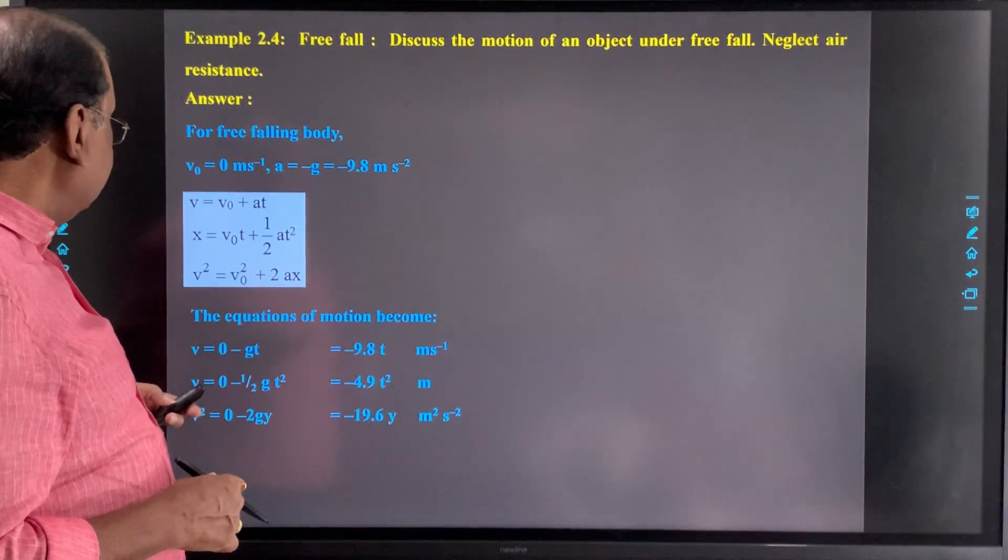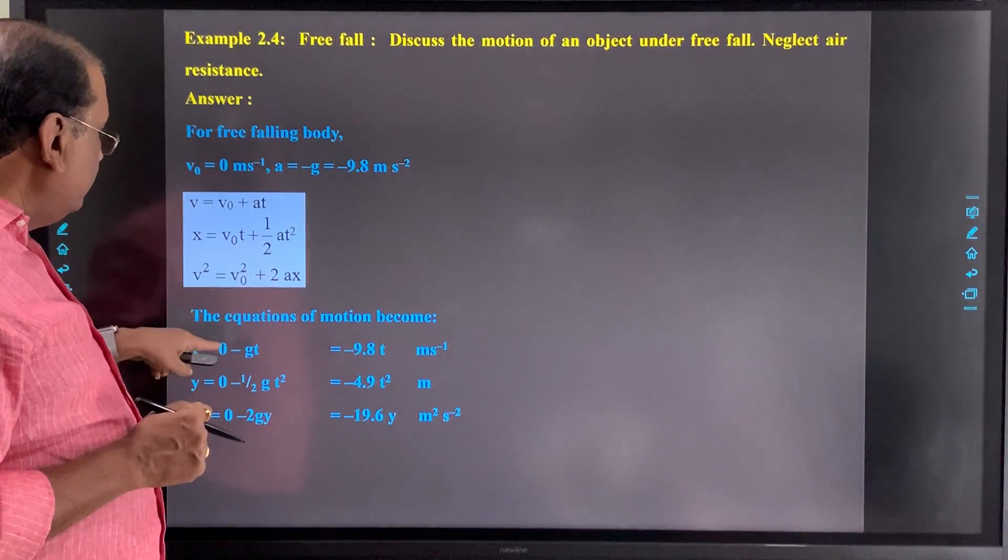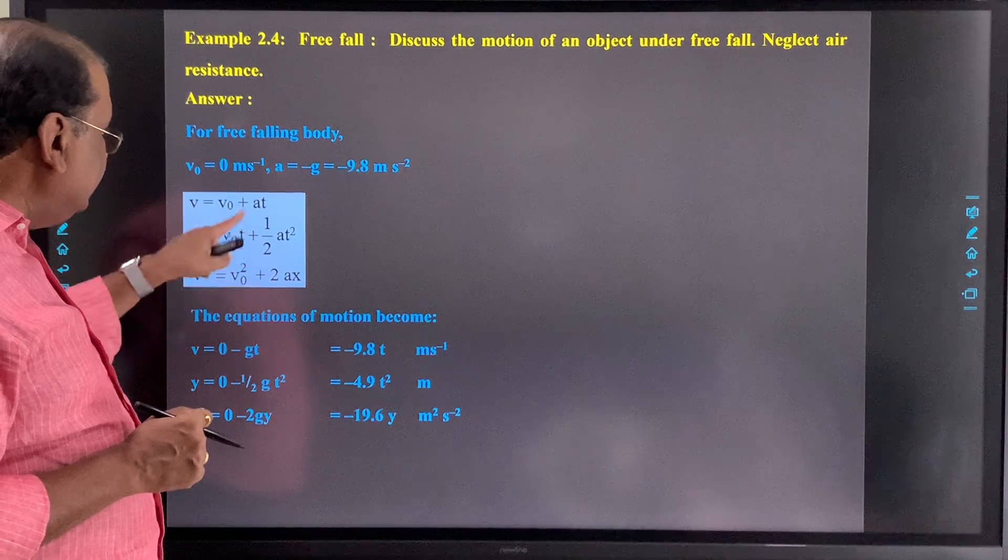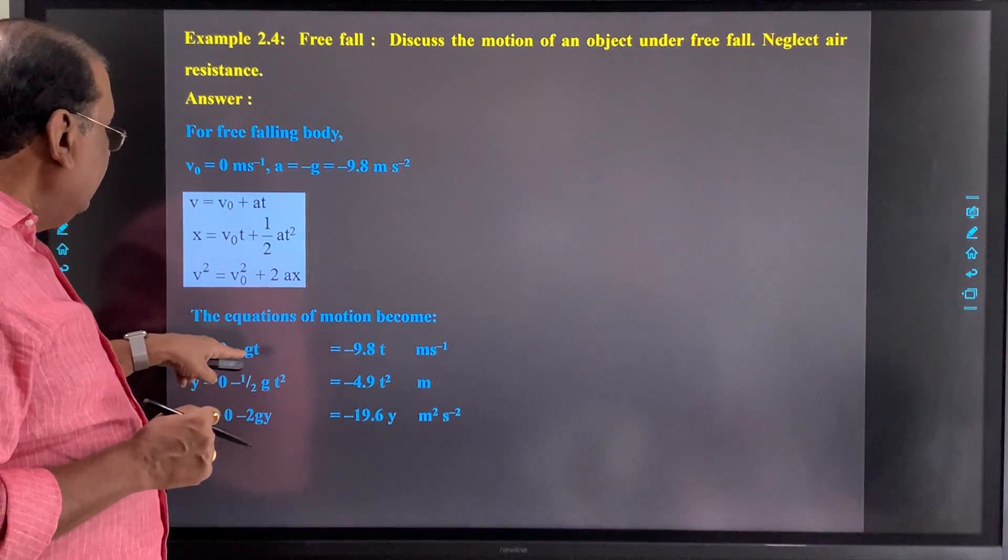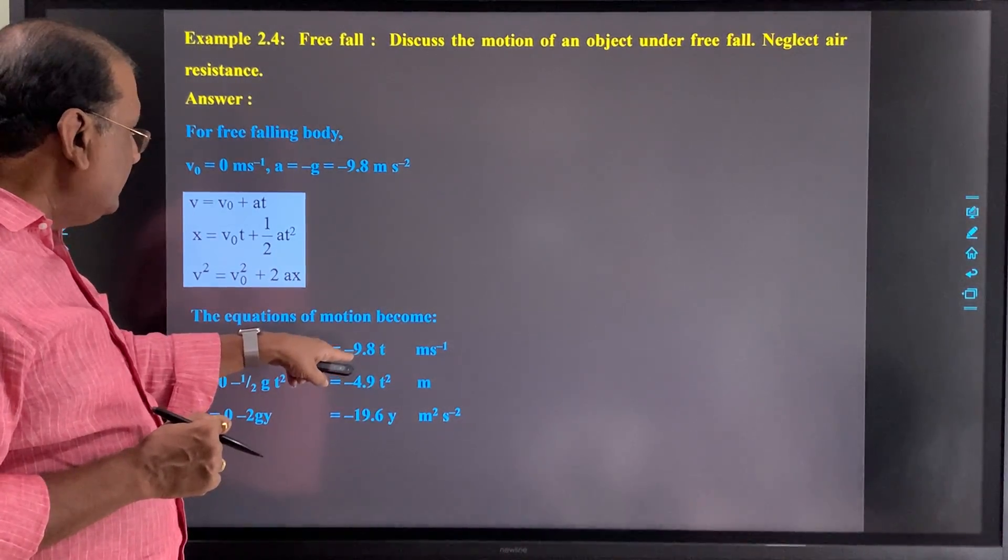Now see, if we substitute the values: v equal to v₀, v₀ is 0, a that is minus g, value of g that is 9.8. So we can write v equal to minus 9.8 into t meter per second.